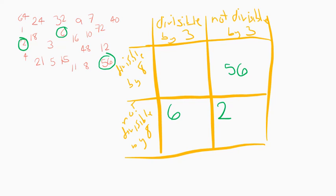So we use Carroll diagrams to organize sets of information based on whether those numbers are divisible or not.